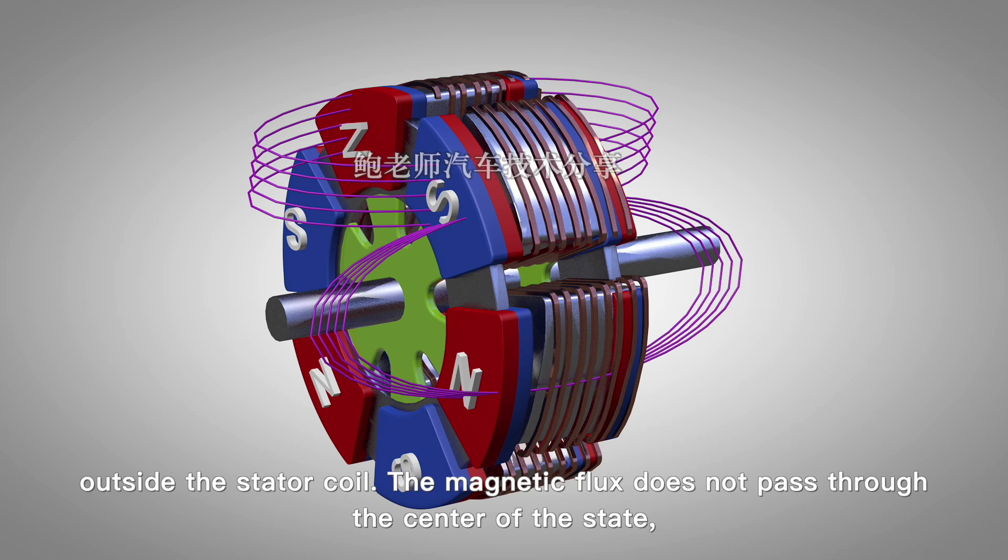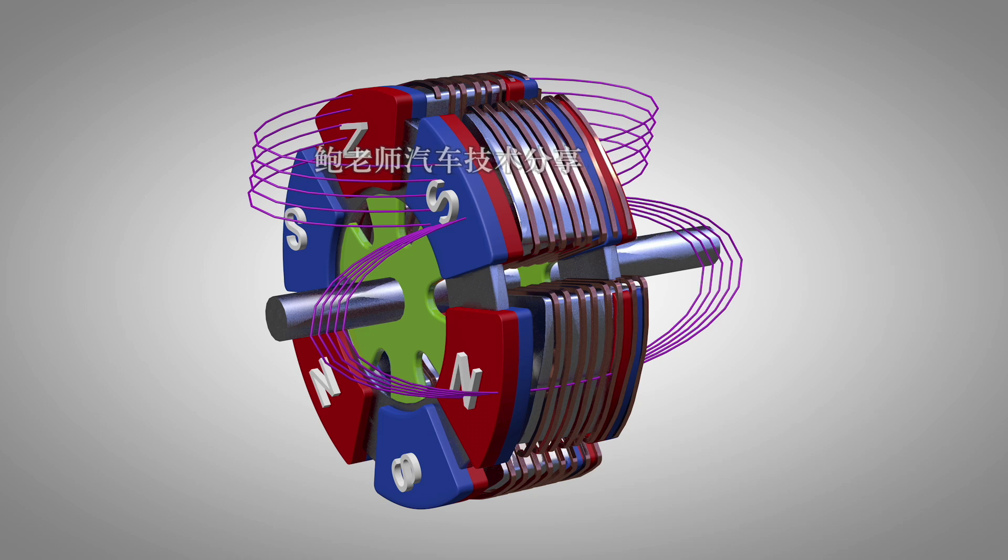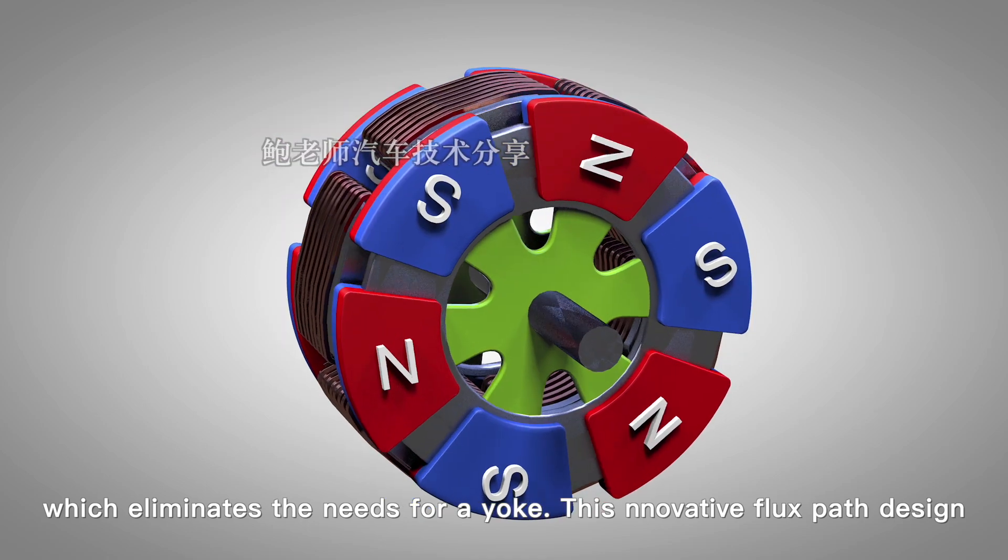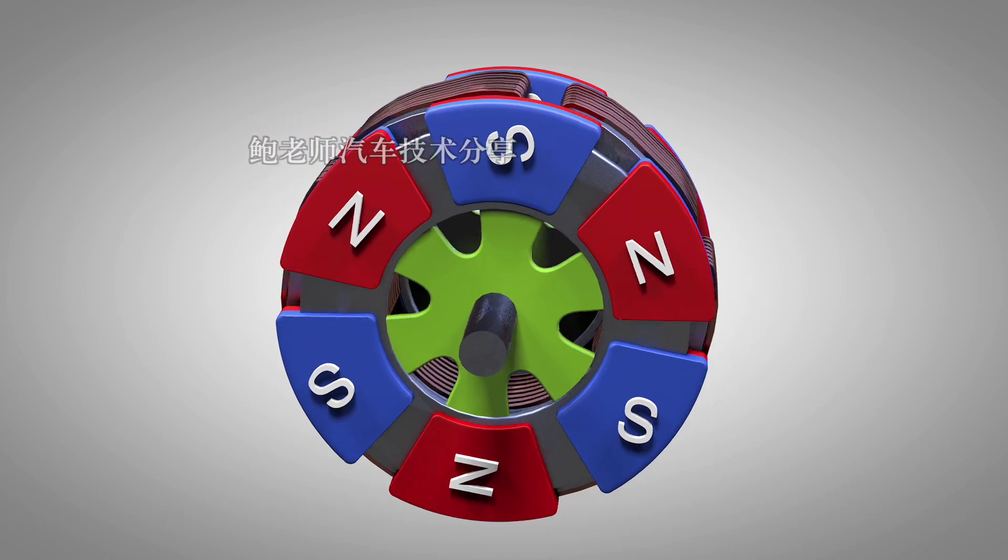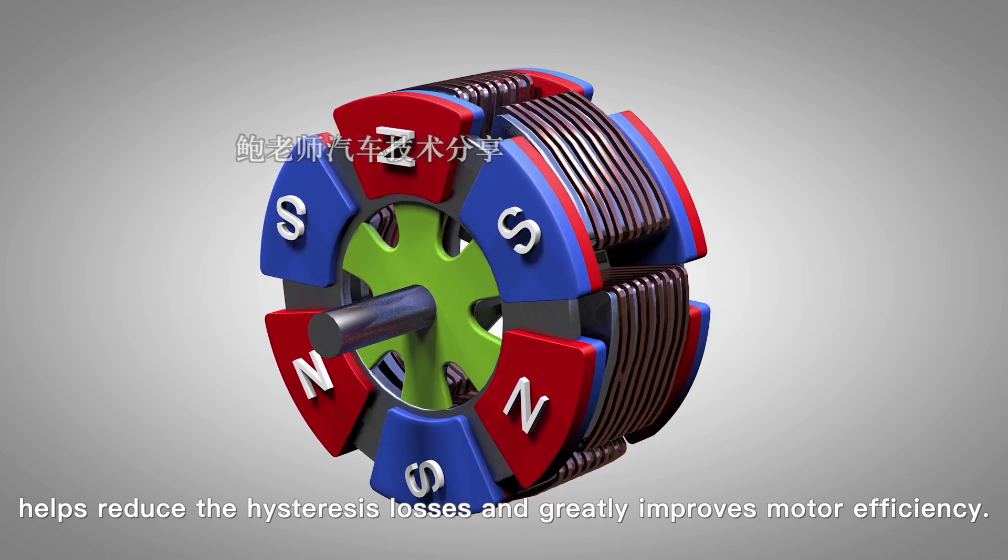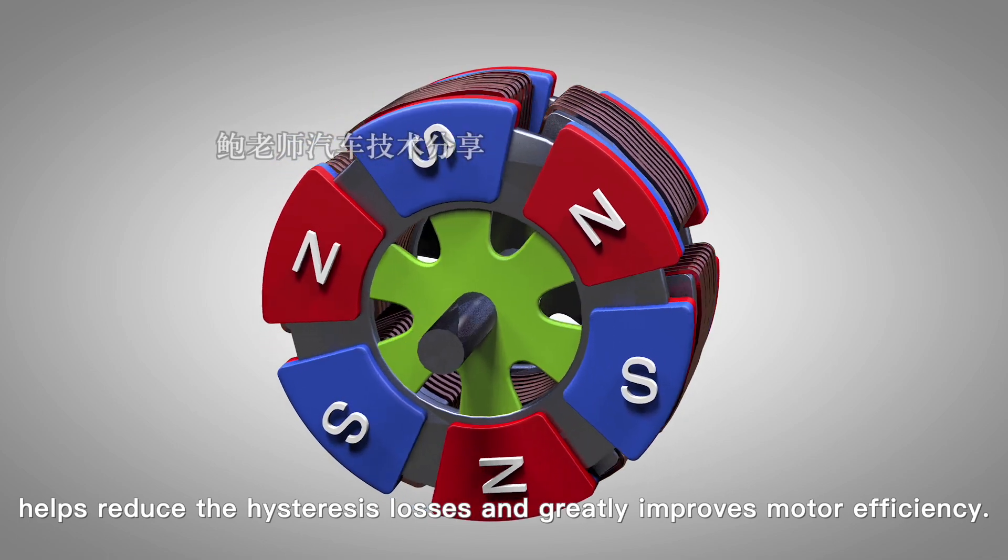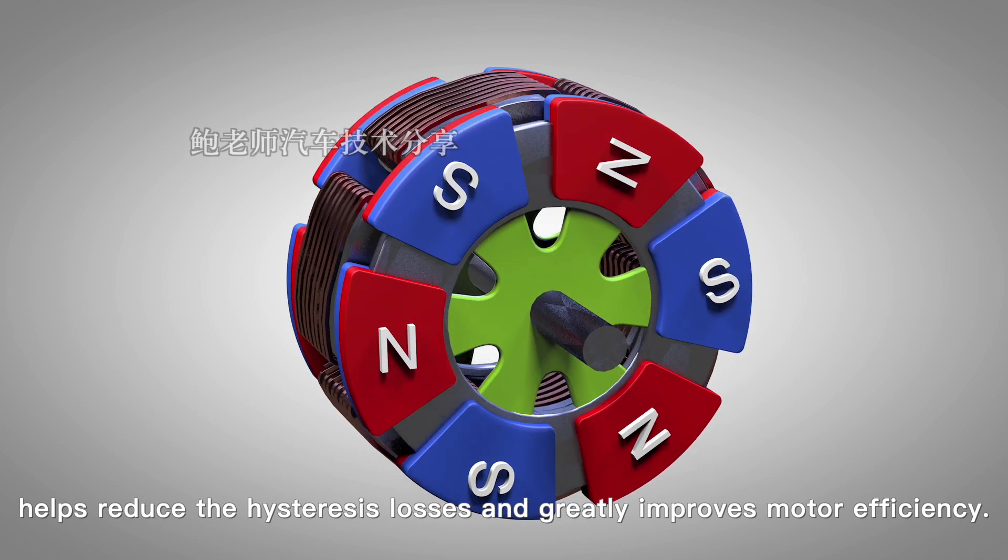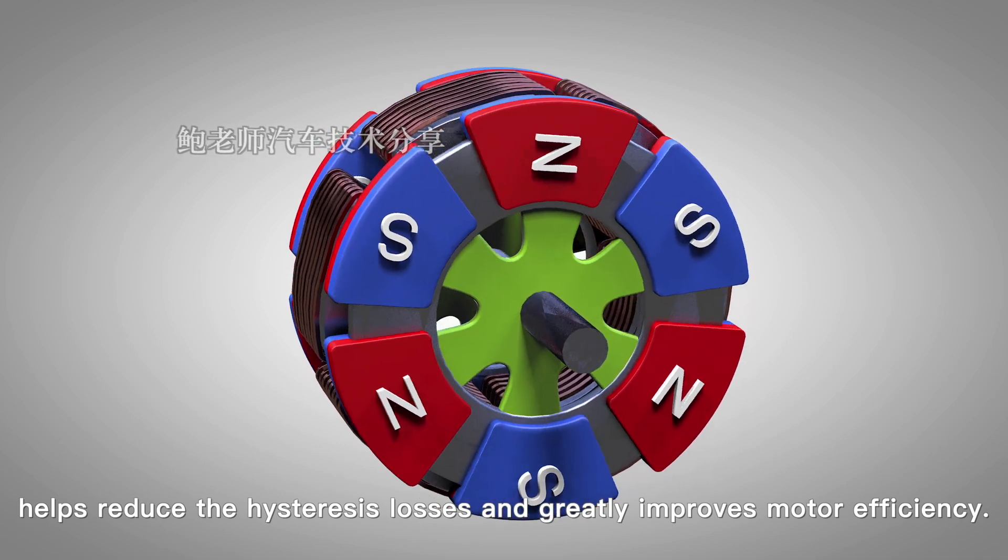So the magnetic flux does not pass through the center of the stator, which eliminates the needs for a yoke. This innovative flux path design helps reduce hysteresis losses and greatly improves motor efficiency.